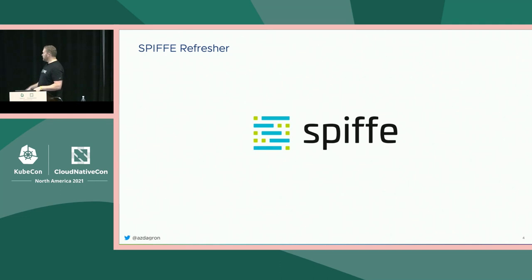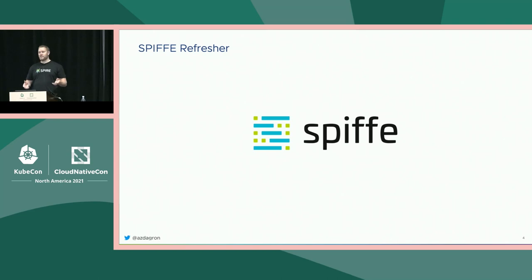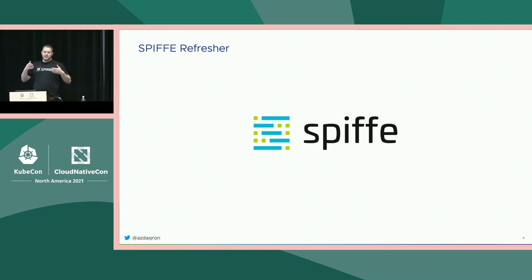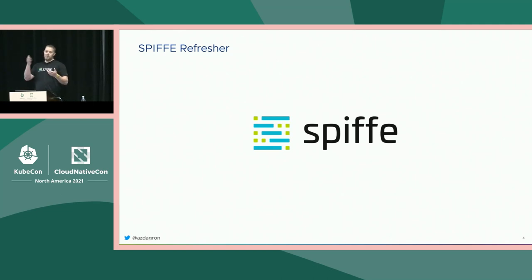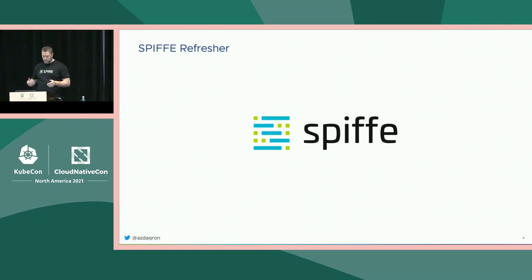What is SPIFFE? It's the Secure Production Identity Framework for Everyone. It is essentially a set of specifications geared around how do you get a workload a cryptographic identity that it can use to authenticate with other workloads, and how do you get the public key material around so that receiving parties of these verifiable identity documents can verify the signatures and verify the authenticity of those documents and get you your authentication.